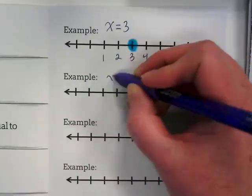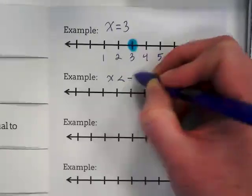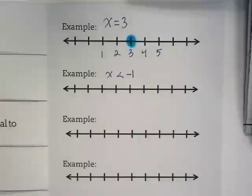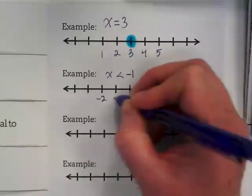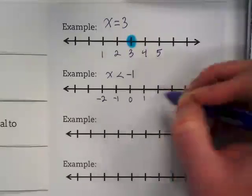Our next example is X is less than negative one. On our graph, I'd like you to do negative two, negative one, zero, one, two.